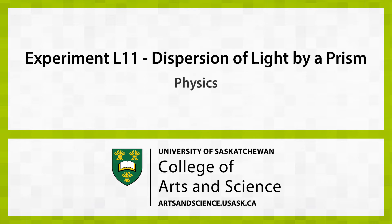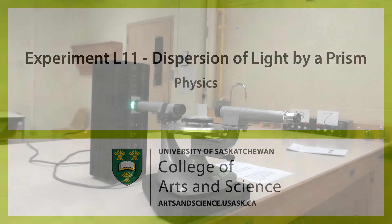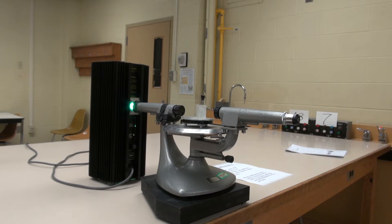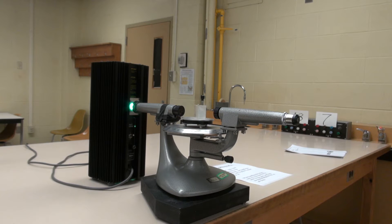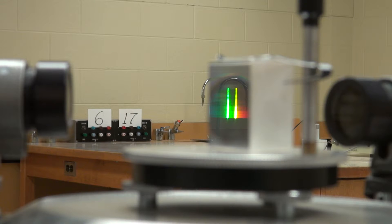The object of this experiment is to use a spectrometer to observe the dispersion of light passing through a glass prism. Dispersion refers to the fact that the path that light travels through glass depends on the wavelength of the light.